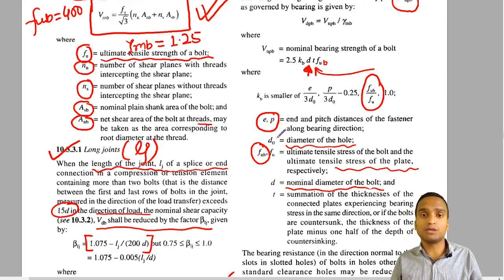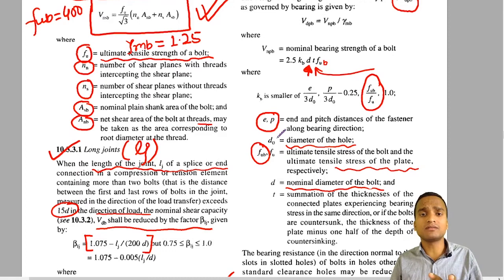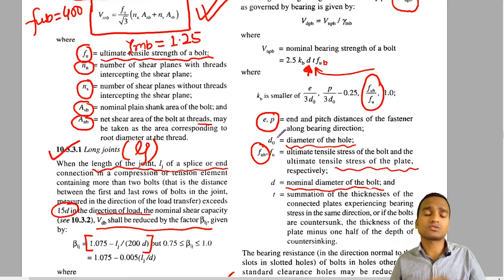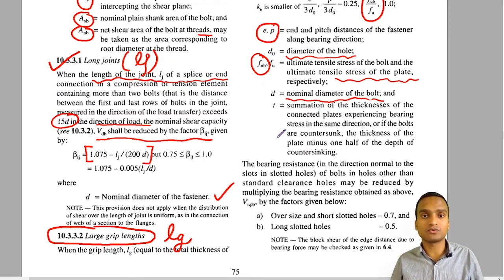After calculating Vnpb, divide by γmb = 1.25 to get the design bearing strength Vdpb. Then take the minimum of shear strength and bearing strength of one bolt, and multiply by the number of bolts to get the strength of the joint. We will discuss a numerical example on calculating bearing and shear strength of bolts in the upcoming video. Stay tuned and stay safe. Thank you.